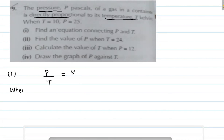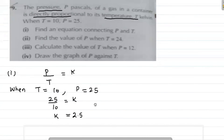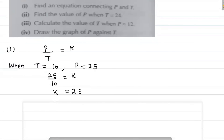So here we go. The ratio P over T equals 2.5. So P over T equals 2.5, and therefore P equals 2.5T.